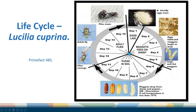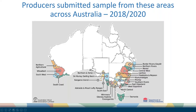The flies emerge, blow their wings up, harden, and then they're able to fly. Their main aim is to find a mate, and then off we go around again when the female lays her eggs. This development is temperature dependent — faster under hotter temperatures and slower under cooler temperatures. That information is in Primefact 485. The co-funded project between AWI and DPI was conducted from November 2017 through to June 2020, with samples received from colored areas across Australia.